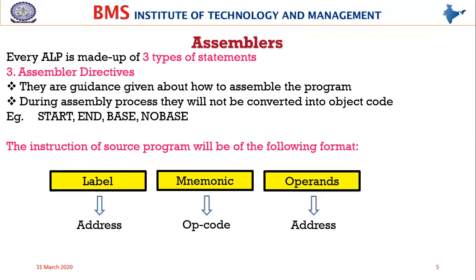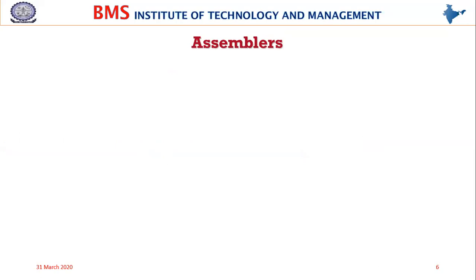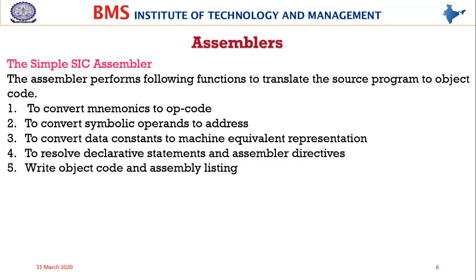Any assembly language instruction has three parts: label, mnemonic, and operands. After assembly, labels and operands are converted into addresses; if operands are constants, they are converted into values; and mnemonics are converted into opcodes. The simple SIC assembler performs five functions: converts mnemonics to opcodes, symbolic operands to addresses, constants to values, resolves assembler directives, and writes the object code.